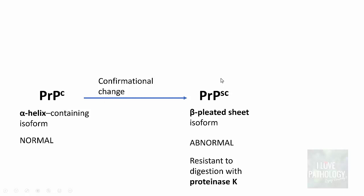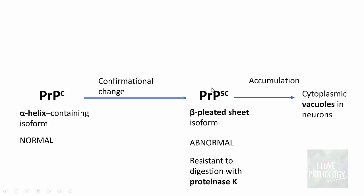When these abnormal PRPSC forms accumulate, the result is vacuolization of the cytoplasm. How these vacuoles are formed is not fully known, but what is known is that they form numerous cytoplasmic vacuoles in the neurons, resulting in the death of those neurons.